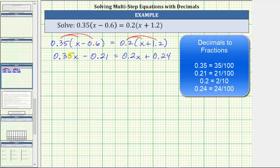Remember 0.35 is 35 hundredths, so as fractions, all the decimals have a denominator of 100, except 0.2 would have a denominator of 10. So just like when working with fractions, we can clear the fractions from the equation by multiplying both sides by the least common denominator, which in this case would be 100.